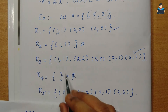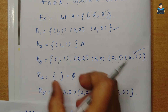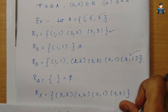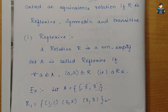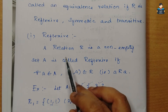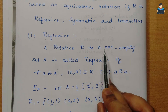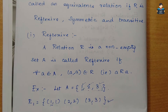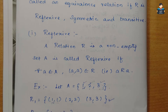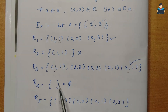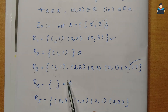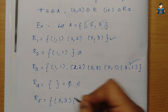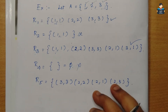R4 is the null set. The reflexive definition requires a non-empty set where all (a,a) pairs are present. Since R4 is null, it is not reflexive.